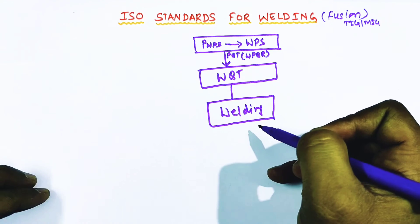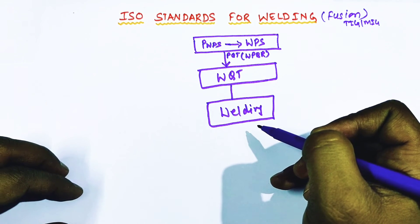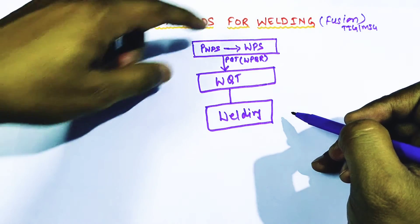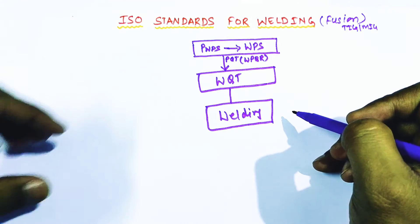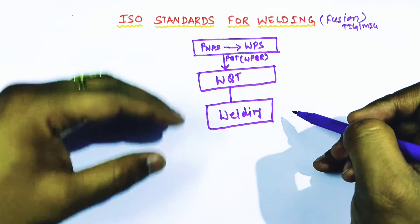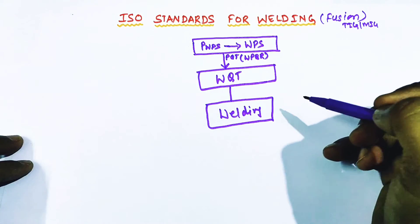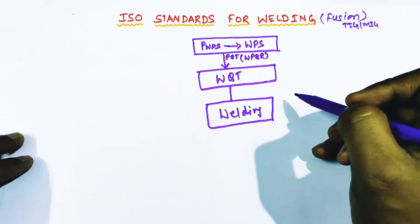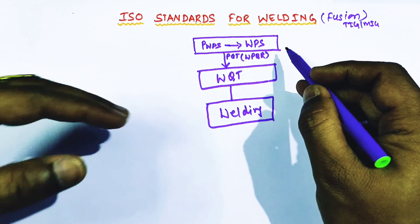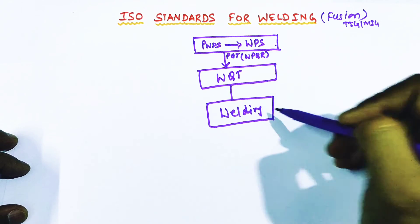The result of the procedure qualification test is recorded and that record is called the welding procedure qualification record — PQR or WPQR. After the PQR, the PWPS becomes the WPS, which is then assumed as qualified. I broadly categorize the fabrication work into three steps only, and now I will explain the ISO codes associated with these activities.